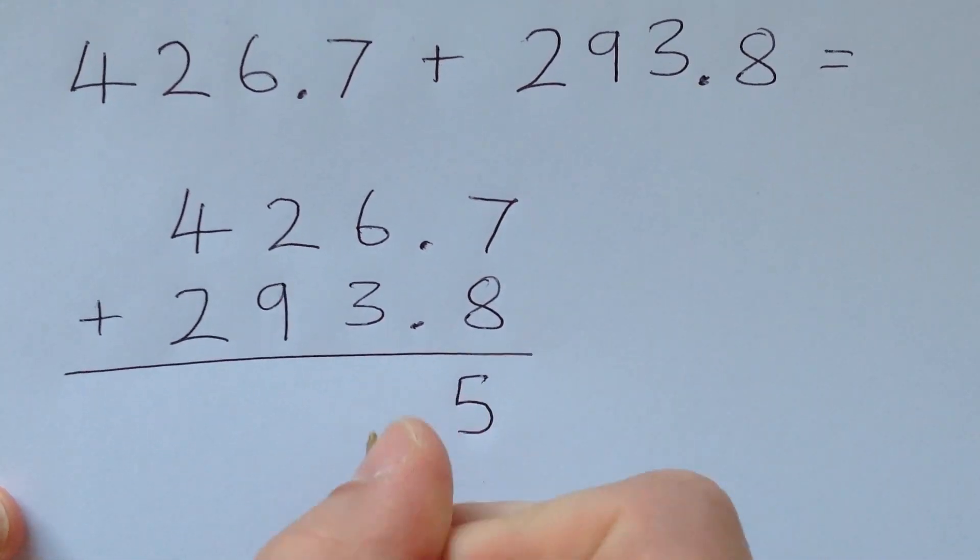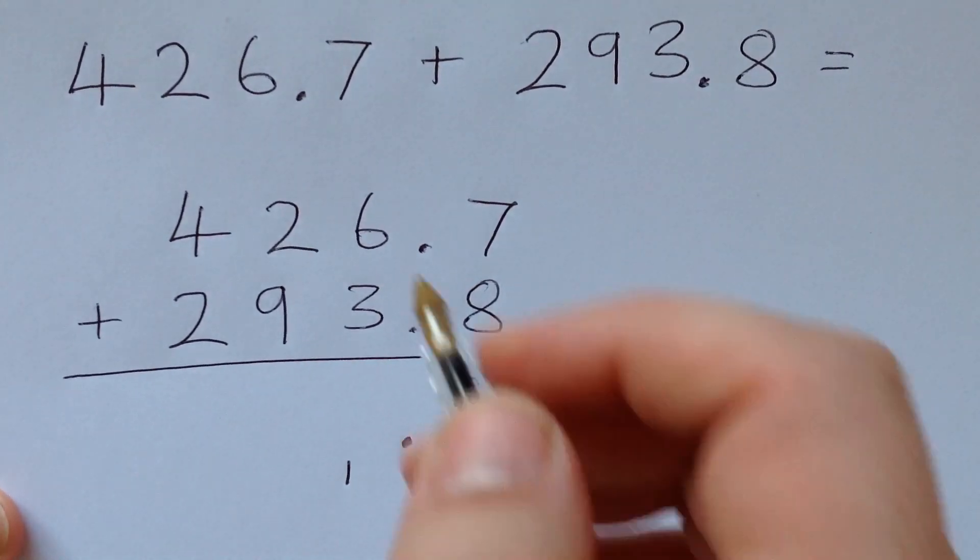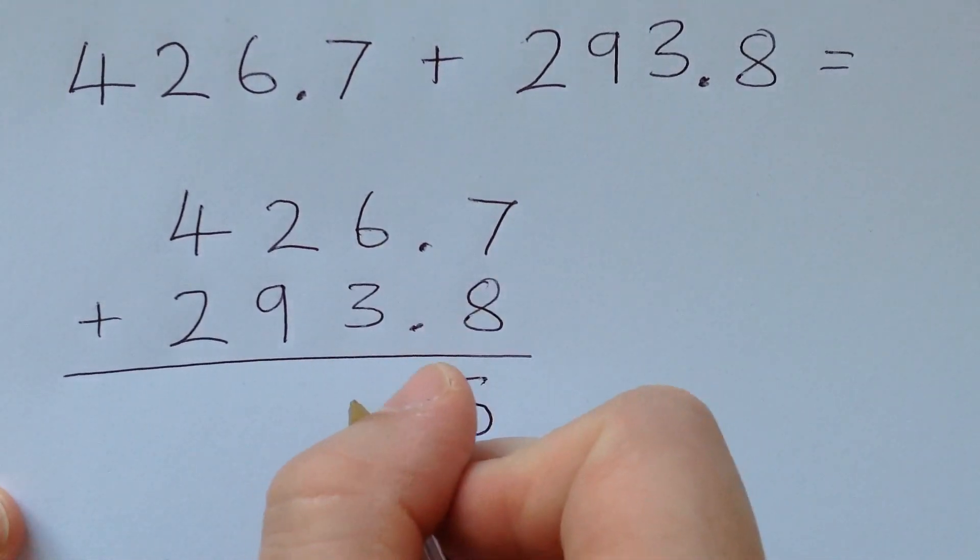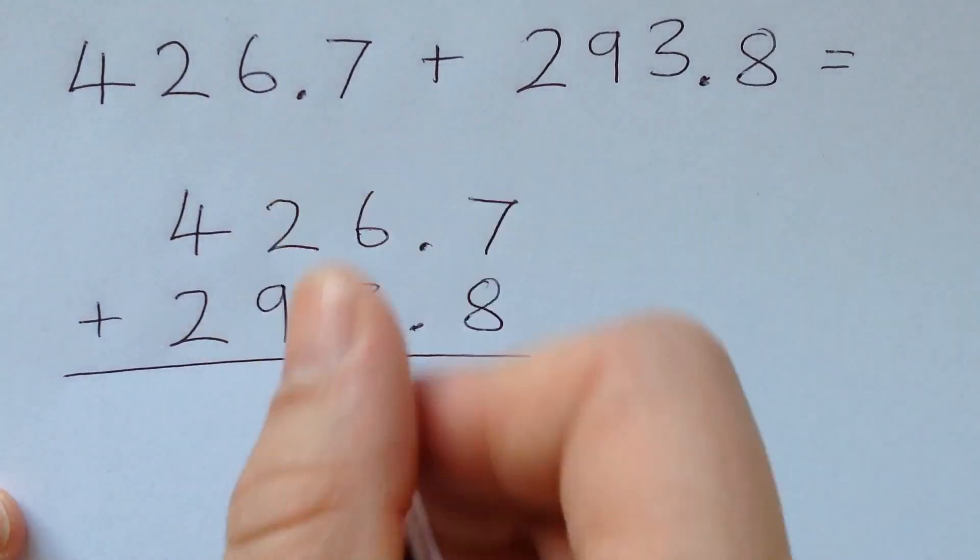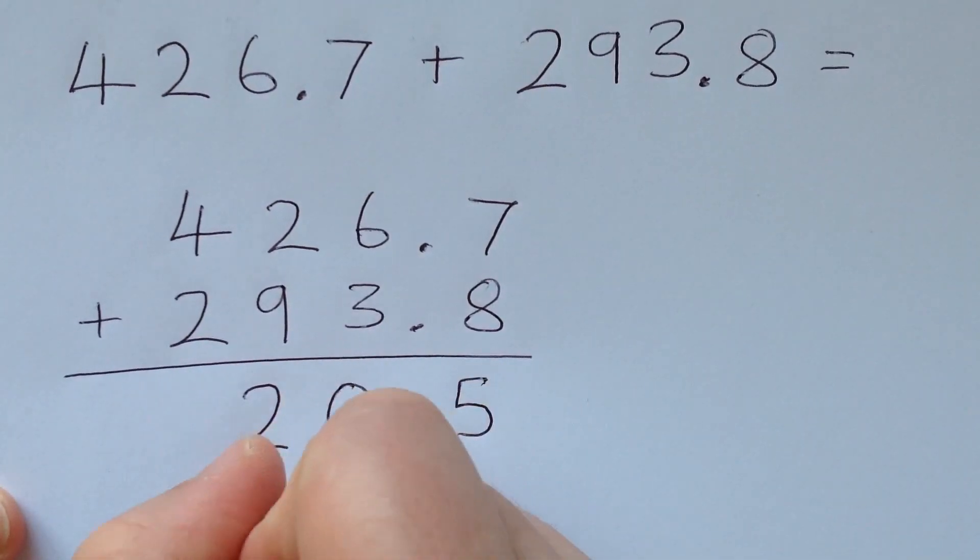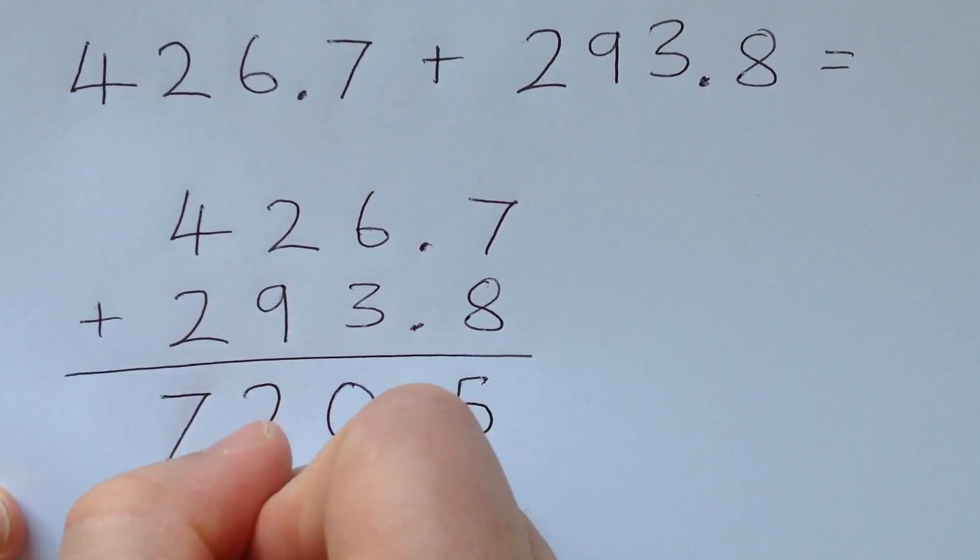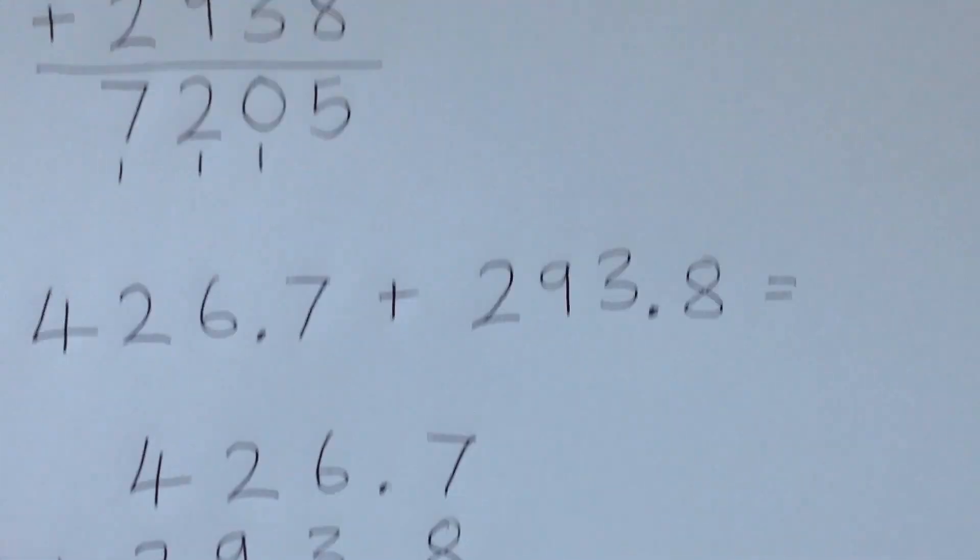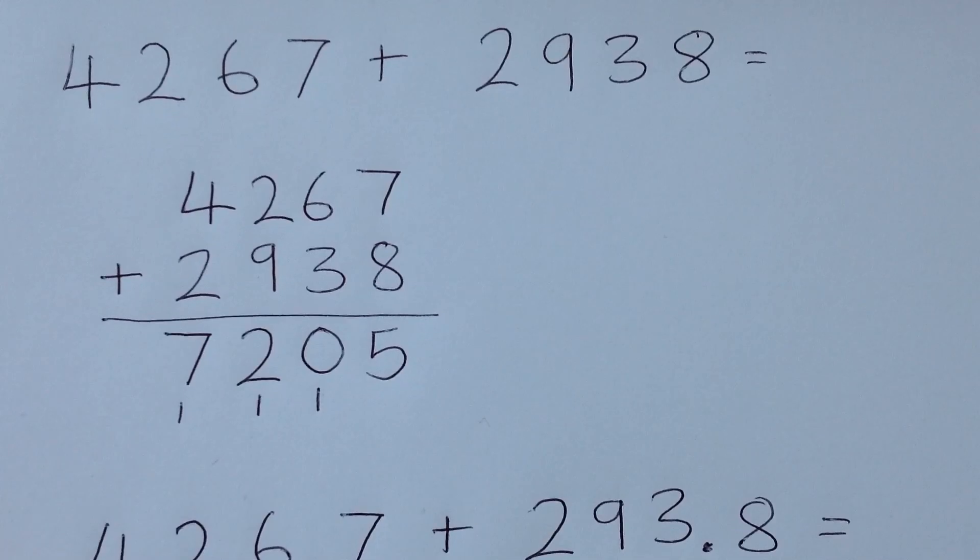Seven plus eight is fifteen. Don't forget my decimal point. Big extra thing I have to remember here. Six plus three is nine, plus one is ten. One and nine is ten, plus two is twelve. Four and two is six, plus one is seven.